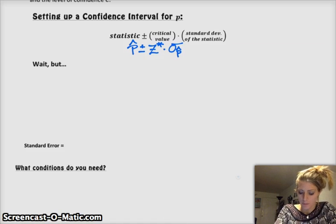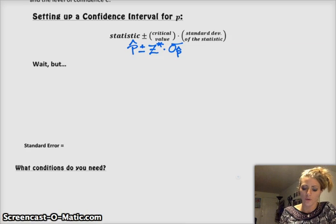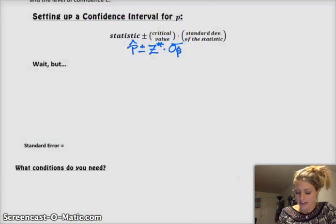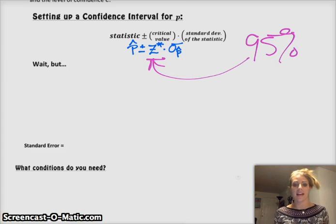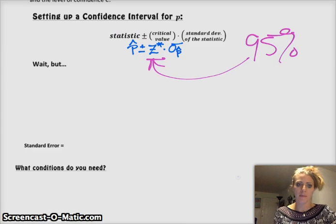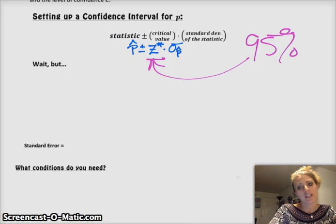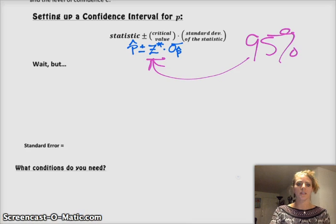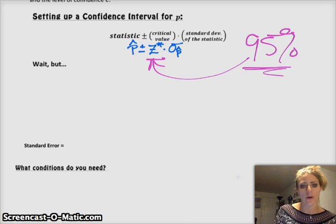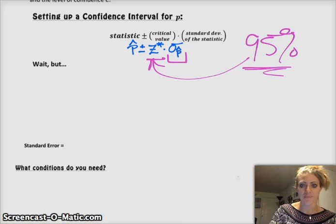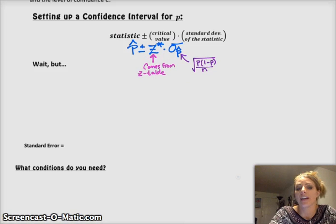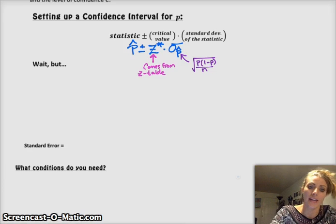So in a 95% confidence level, my Z-star is going to come from that information. You're going to be going to the Z-score table and looking for a specific Z-score that corresponds to the confidence level that you want. And then your sigma sub P-hat, that comes from the formula for the standard deviation of the sampling distribution of P-hat.